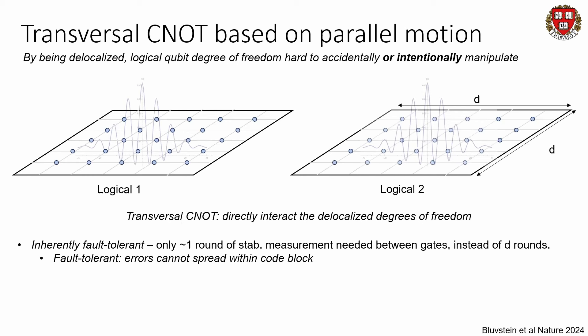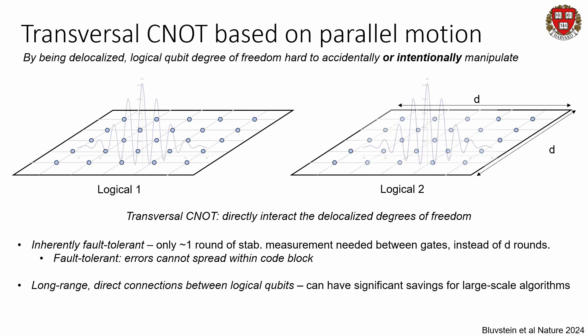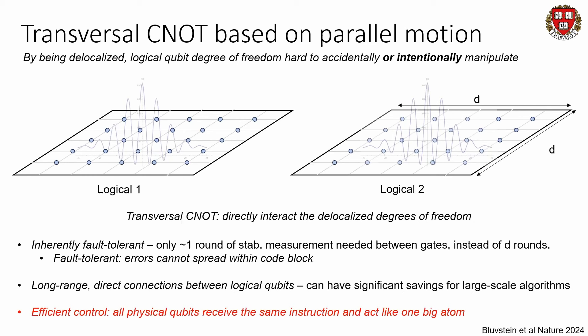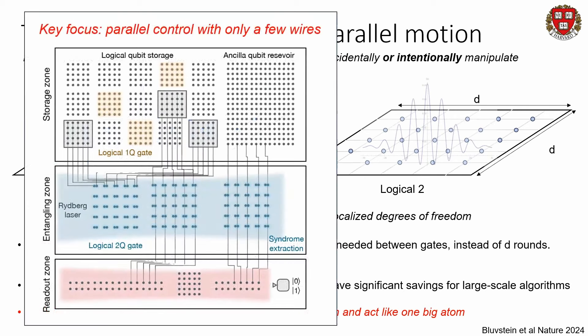This approach has many benefits. It allows us to dramatically reduce the total amount of error correction we have to do — greatly reducing the number of stabilizer measurements per logical operation. From an algorithmic perspective, it starts to give us long-range and direct connections between logical qubits, with significant savings for large-scale algorithms. From an experimental perspective, the thing I cannot possibly emphasize enough is it gives us efficient classical control: all these physical qubits, now in one big block, act like one effectively big atom that we can address with just one big laser beam.